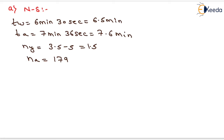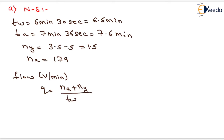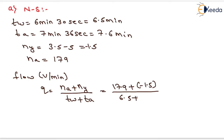Now we determine the flow Q in vehicles per minute. The formula is Q equals NA plus NY divided by TW plus TA. Substituting NA as 179, NY as minus 1.5, TW as 6.5, and TA as 7.6, Q comes out to 12.58 vehicles per minute.